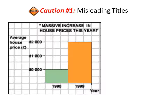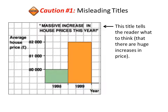The first caution is misleading titles. Let's take a look at this first graph. As you can see, the title of this graph says 'massive increases in the house prices this year.' This title is basically telling the readers what to think — that there are huge increases in price.